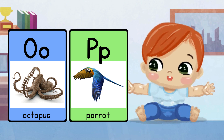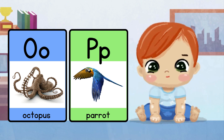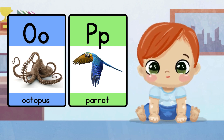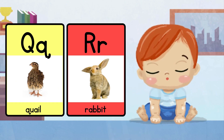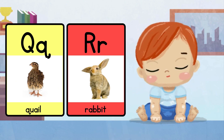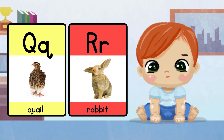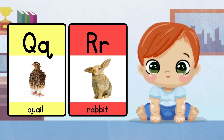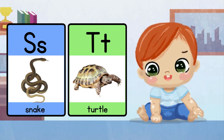O for octopus. P for parrot. Q for quail. R for rabbit. S for snake.